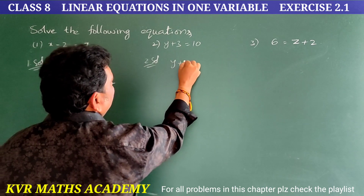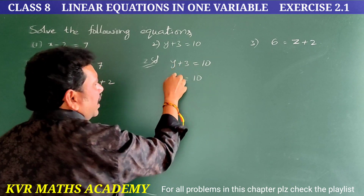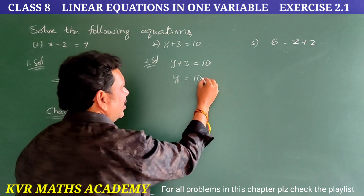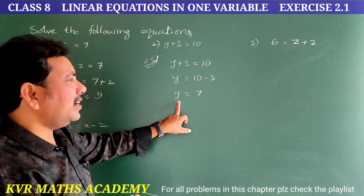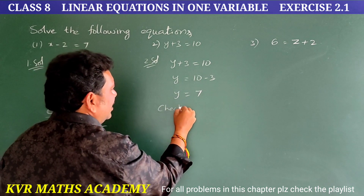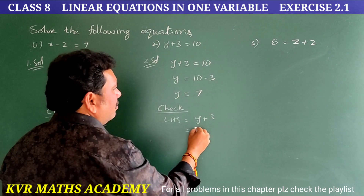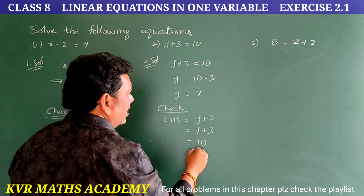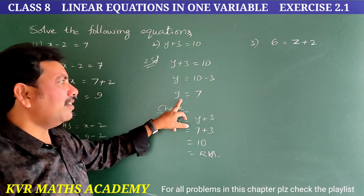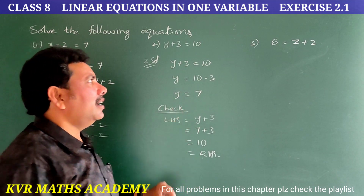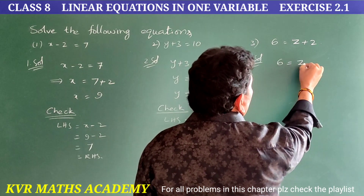Second solution. Given: y plus 3 is equal to 10. Transposing 3 to the other side gives y equals 10 minus 3, so y equals 7. Check: LHS equals y plus 3 equals 7 plus 3 equals 10, which equals RHS. Therefore y equals 7.